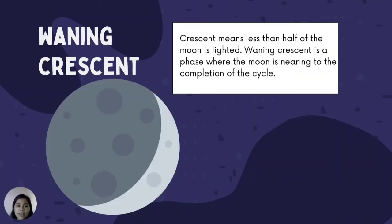Waning Crescent: Crescent means less than half of the moon is lighted. Waning Crescent is a phase where the moon is nearing the completion of the cycle.